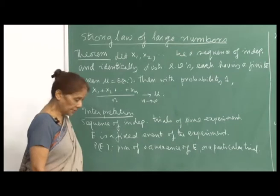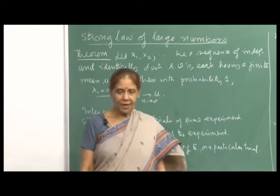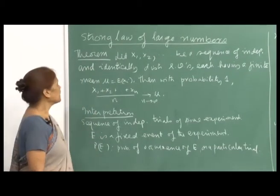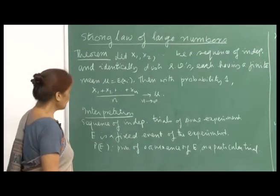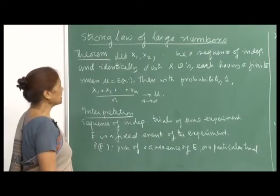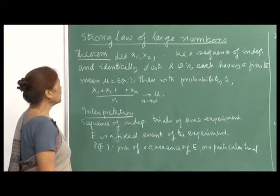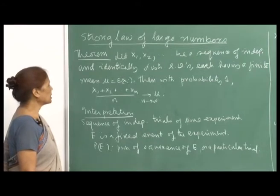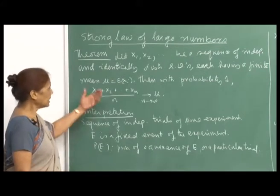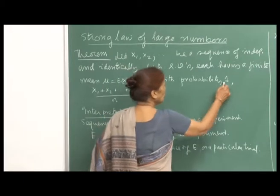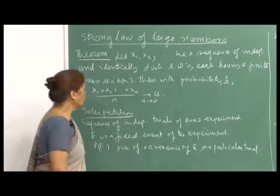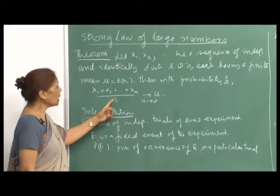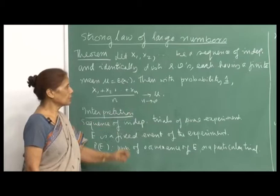Now I will talk about the strong law of large numbers, having already discussed the weak law. I will first just state the theorem. The theorem says that if x_1, x_2, ..., x_n is a sequence of independent and identically distributed random variables, each having a finite mean mu equal to E[x_i], then with probability 1, the sample average (x_1 + x_2 + ... + x_n)/n will converge to mu as n goes to infinity.